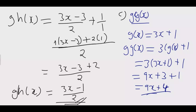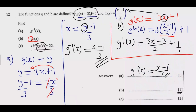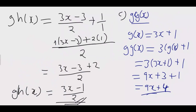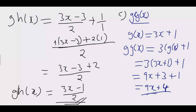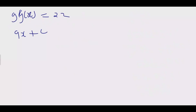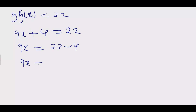Since g of g of x equals 22, we set 9x plus 4 equal to 22. Then 9x equals 22 minus 4, so 9x equals 18. Dividing both sides by 9, x equals 2.